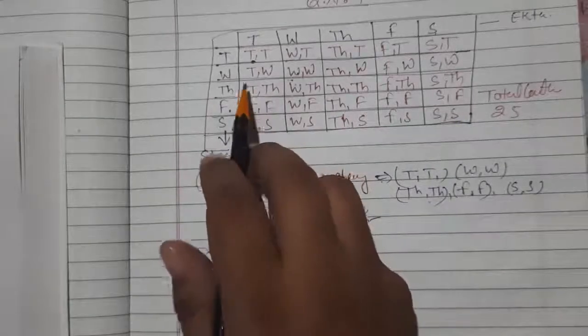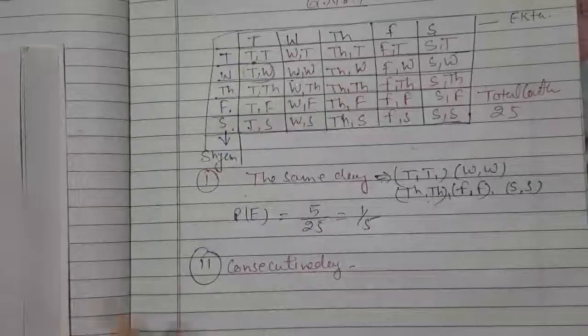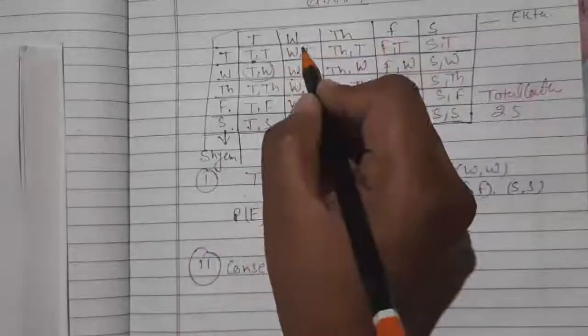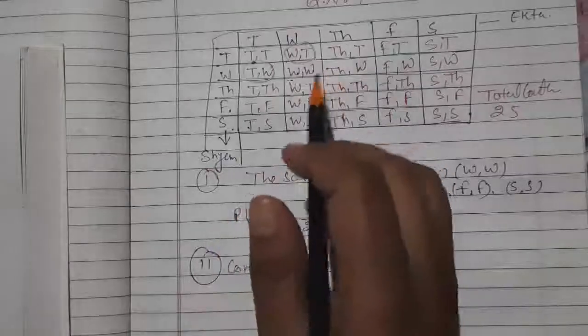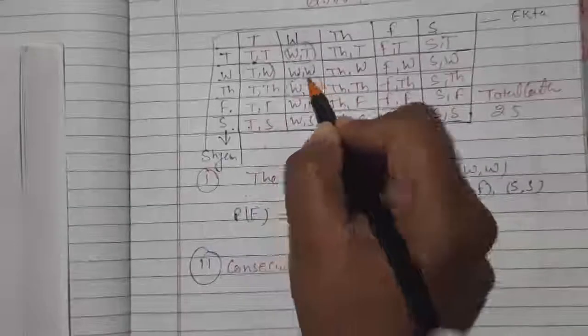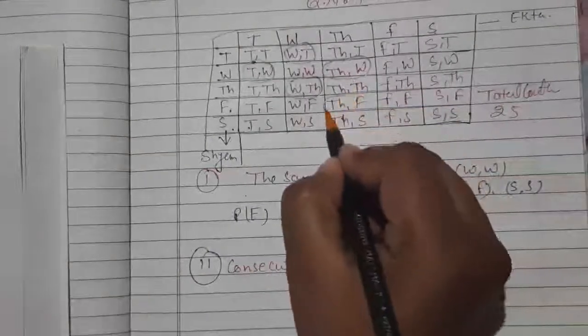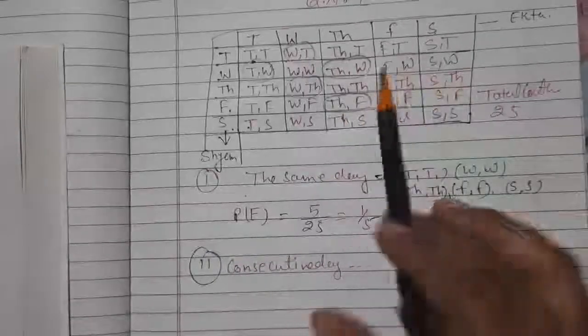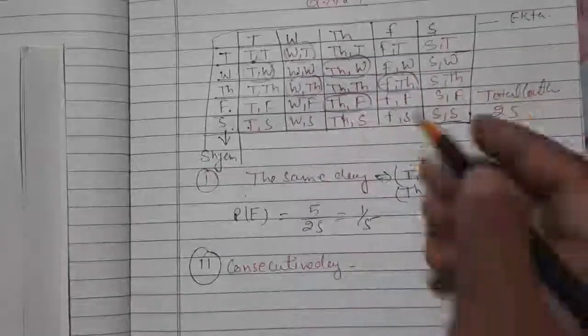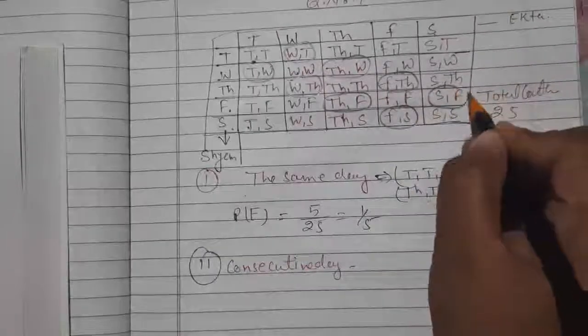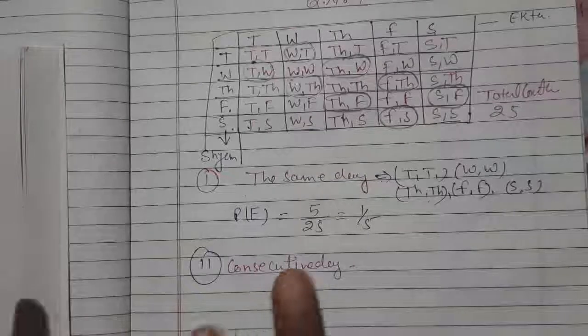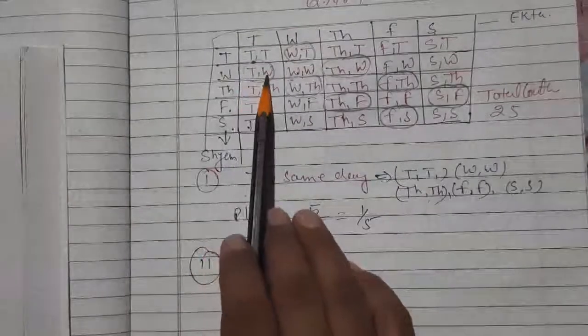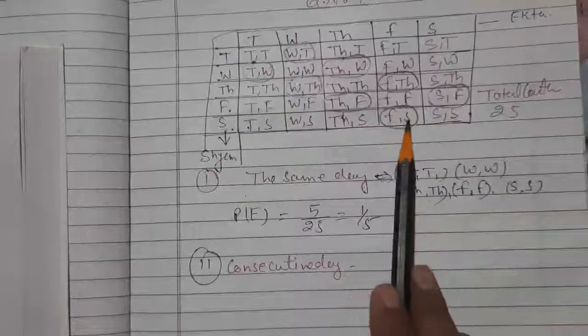The consecutive day pairs are: Tuesday-Wednesday and Wednesday-Tuesday; Wednesday-Thursday and Thursday-Wednesday; Thursday-Friday and Friday-Thursday; Friday-Saturday and Saturday-Friday. These are all the consecutive day pairs for Shyam and Ekta visiting the shop.